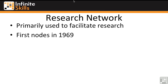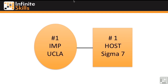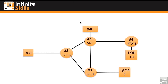In 1969 we get the first node, and we can take a look at a diagram here of the first hookup. We've got the Interface Message Processor, or IMP, which was an early router — the very first router — and the first host was a Sigma 7 system. By December of 1969 we end up with a four-node ARPANET: SRI, Utah, UCLA, and UCSB.